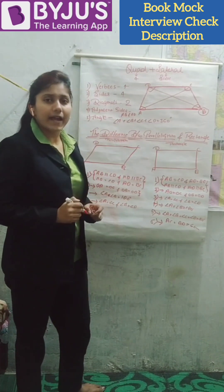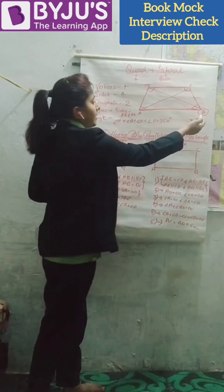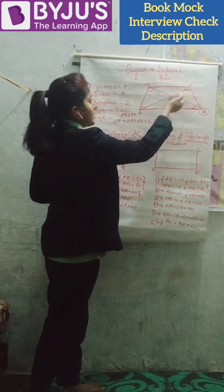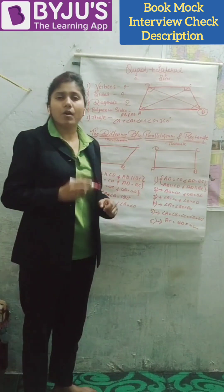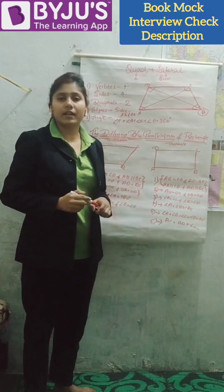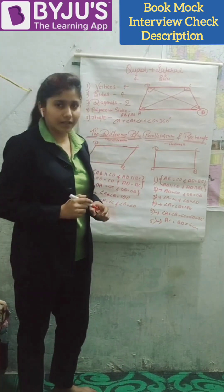Fourth is angle. Angle A, angle B, angle C, and angle D. So we can say that the sum of all four angles is 360 degrees.